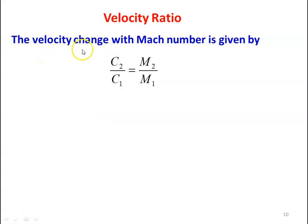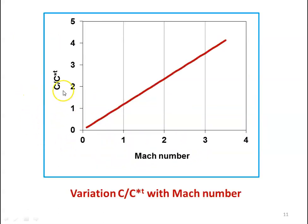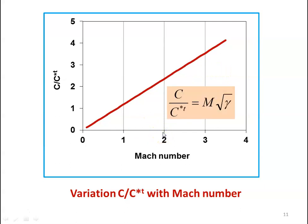For velocity, from the continuity equation: ρ2/ρ1 = C1/C2, so the velocity ratio C2/C1 = M2/M1. The velocity ratio up to the limiting Mach number M = 1/√γ is given by C/C*T = M√γ. The variation of C/C*T with respect to Mach number is shown for γ = 1.4.